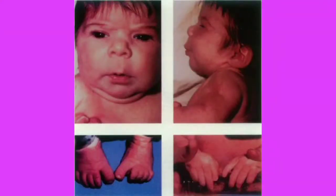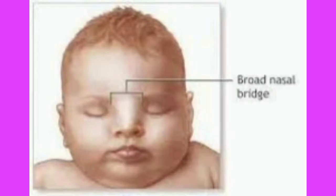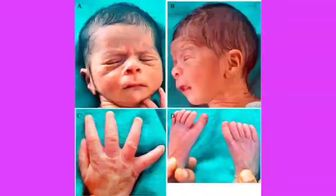Another feature of fetal hydantoin syndrome is the broad nasal bridge — you can see how it has been widened. Broad nasal bridge is an important feature to remember. These babies also show microcephaly, hypoplasia of the fingers and toes, and cardiac defect. This child will also have mental retardation. So all these features together indicate fetal hydantoin syndrome.